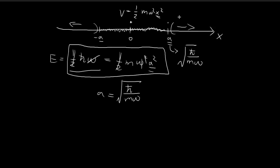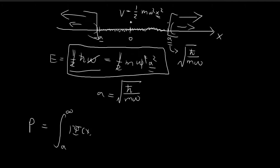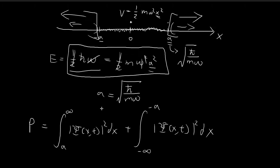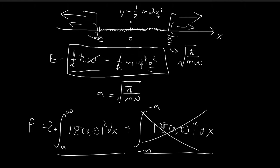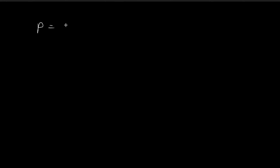Now I want to find the probability of finding the particle in the two outer regions. The probability is equal to the integral from a to infinity of the wave function squared dx, plus the integral from negative infinity to negative a of the wave function squared dx. Because of the symmetrical nature of the quantum harmonic oscillator, these two integrals are the same, so the probability is just two times the first integral.